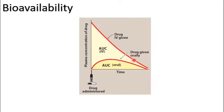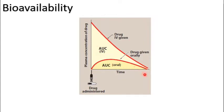Then the concentration declines due to elimination. The other curve is for a drug given by the intravenous route — there is no absorption phase; all the dose taken reaches the systemic circulation, and then the concentration starts to decline due to elimination. For both curves, this area is called the area under the curve, or AUC. So we have AUC for the IV route and AUC for the oral route.